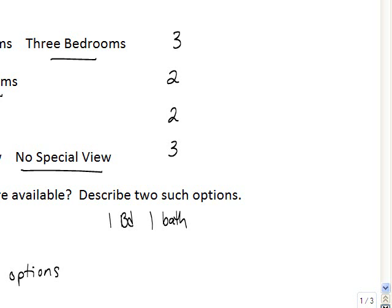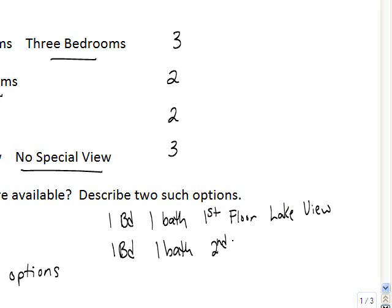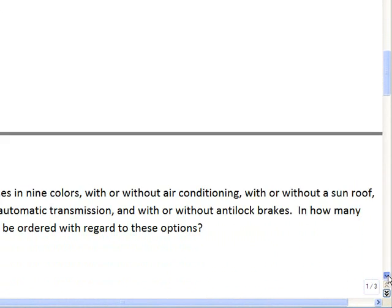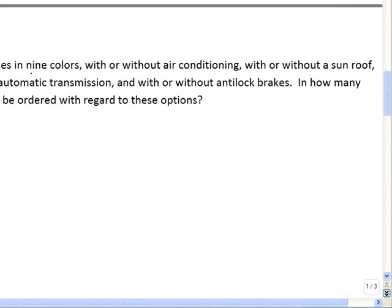For example, one option would be a one-bedroom, one-bath, first-floor, lake-view apartment, or a one-bedroom, one-bath, second-floor, lake-view apartment. There are a total of 36 different ways to combine the options. Let's try another example. Example number two: a car model comes in nine colors, with or without air conditioning, with or without a sunroof, with or without automatic transmission, and with or without anti-lock brakes.